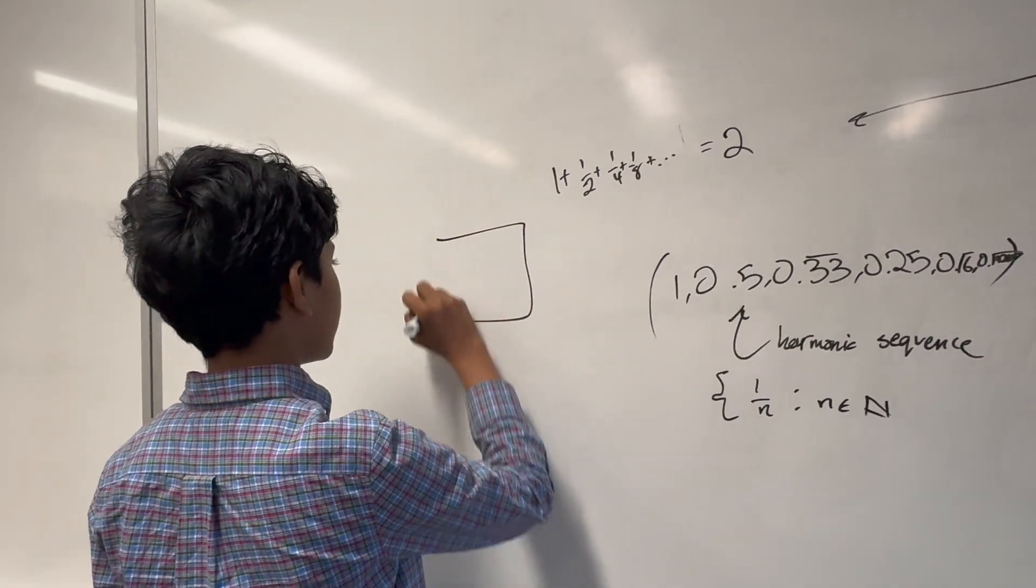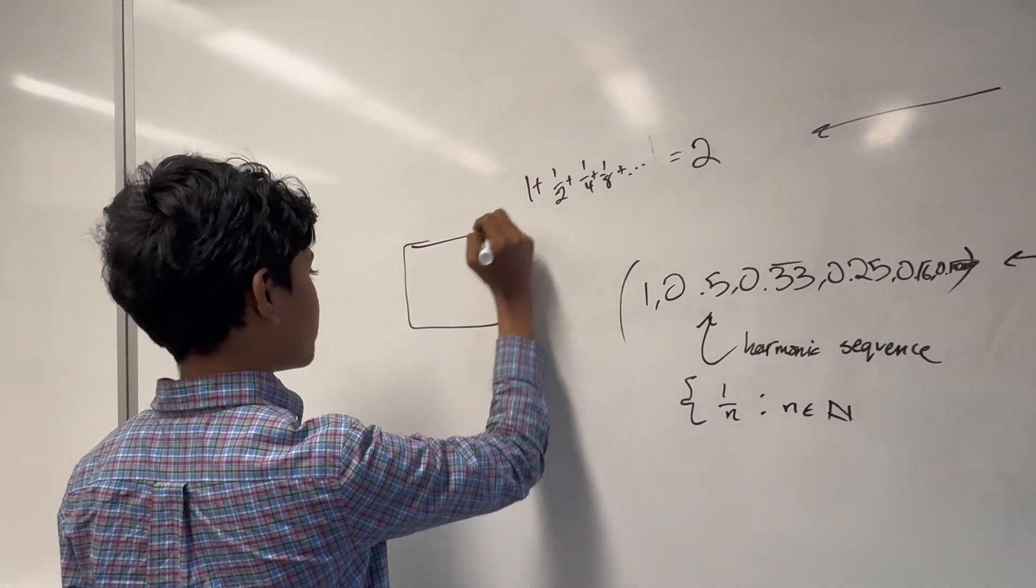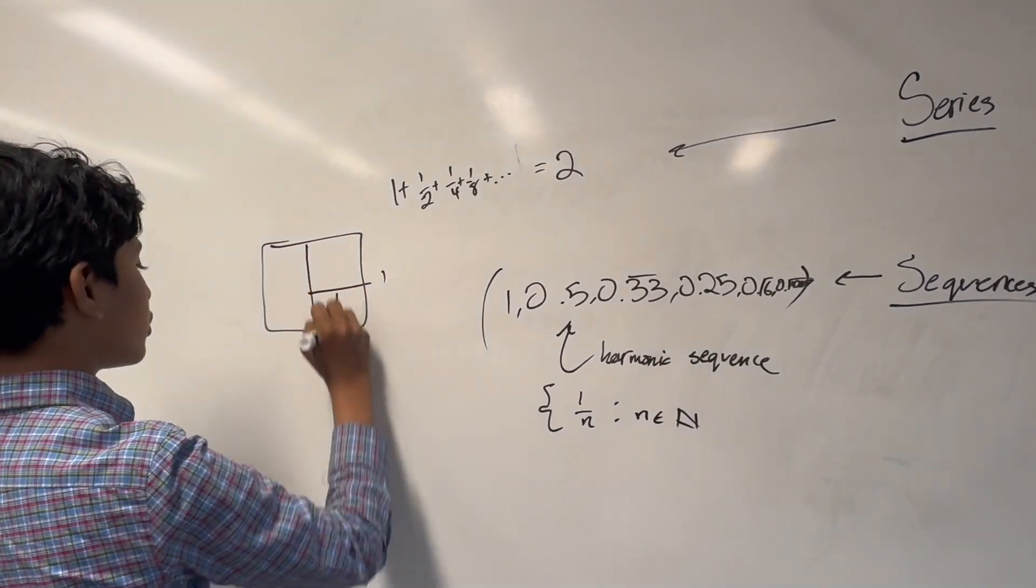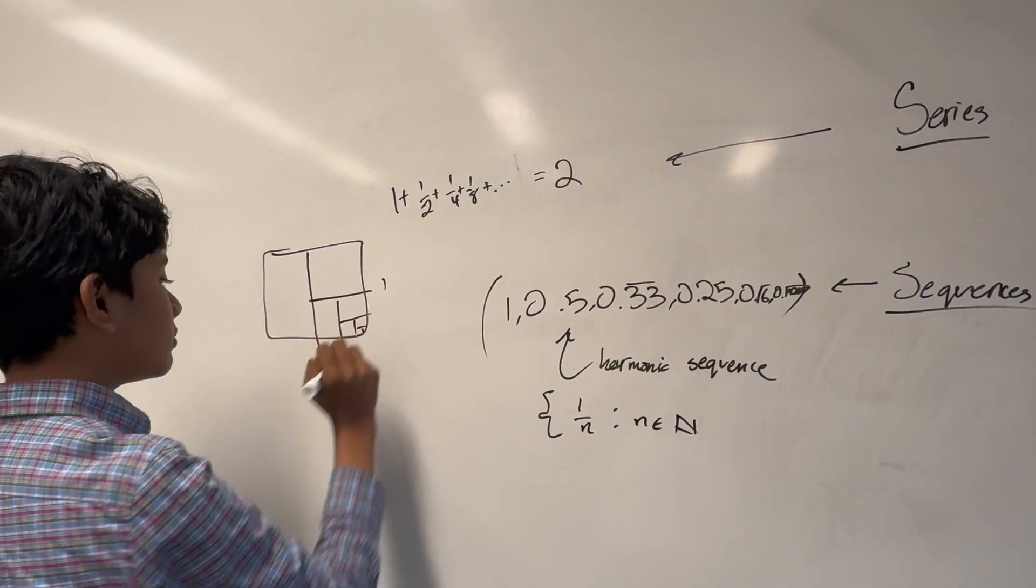You've probably already seen this geometric interpretation where you have a 1 by 1 square, and you cut it in half, then 1/4, 1/8, 1/16, and so on. That is...